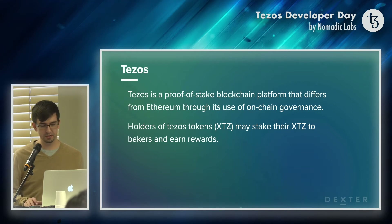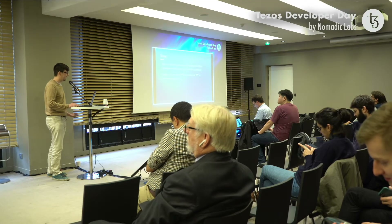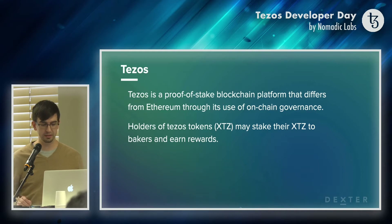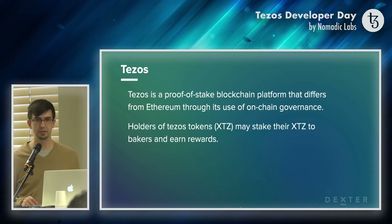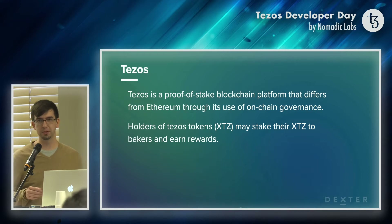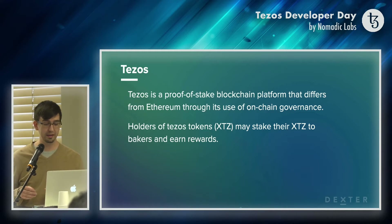A little bit about Tezos for those in the audience not as familiar with it. It's a proof of stake blockchain that differs from Ethereum through its use of on-chain governance. That means changes to Tezos are proposed on Tezos and decided by stakeholders of Tezos tokens. The holders of these Tezos tokens, which will be referred to as XTZ through the rest of the presentation, may stake their XTZ to individuals we call bakers and earn rewards. This part about rewards is important to keep in mind because we want to maintain the right to earn these rewards for anything that's on Dexter.